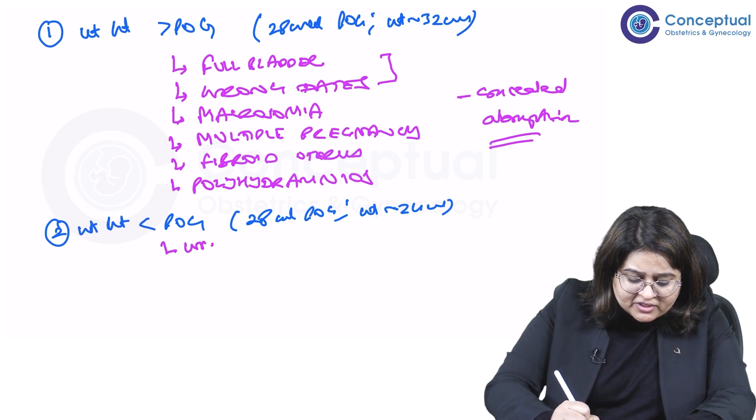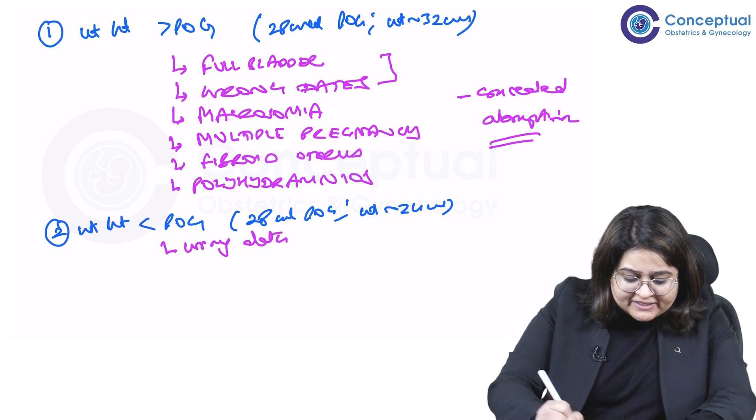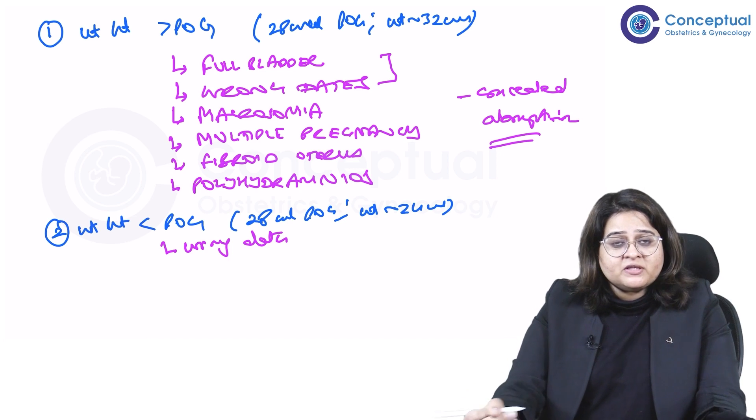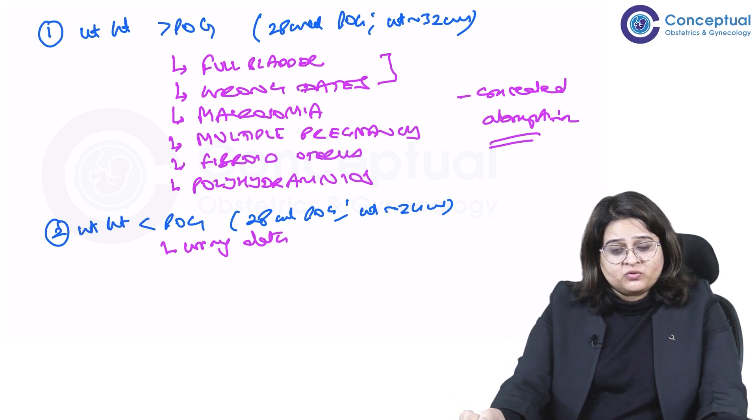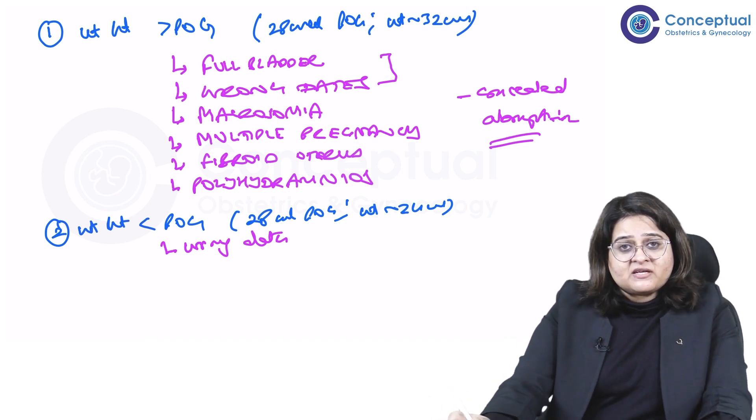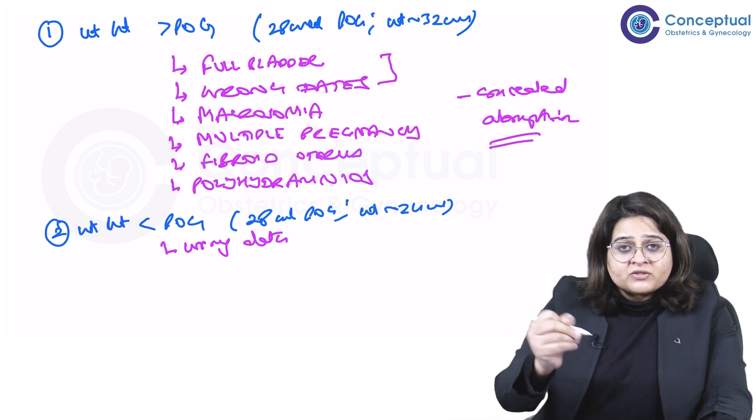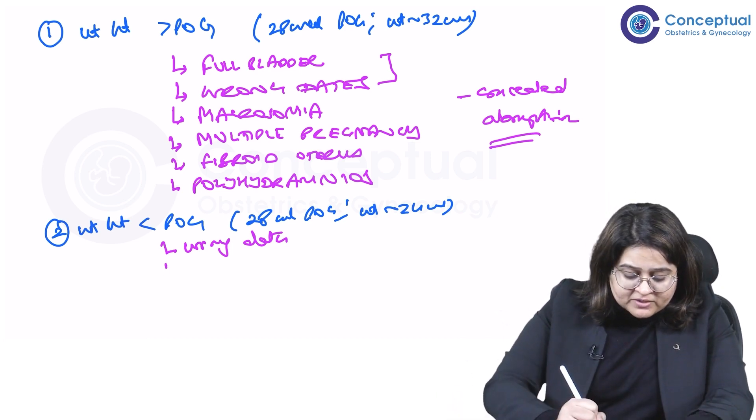Maybe you've calculated her period of gestation wrongly. Maybe she's told you a wrong LMP. Check if she has ultrasounds, especially a first trimester scan. So corroborate your dating.